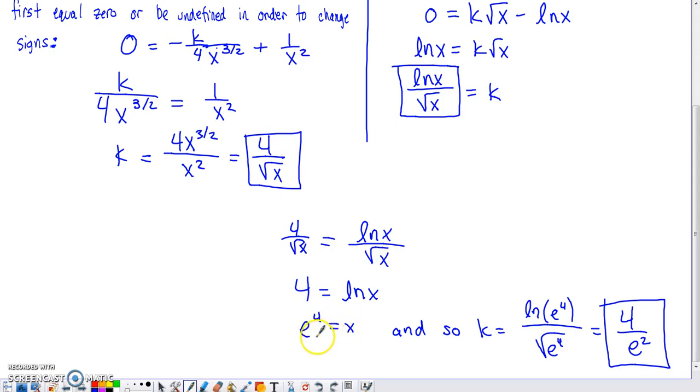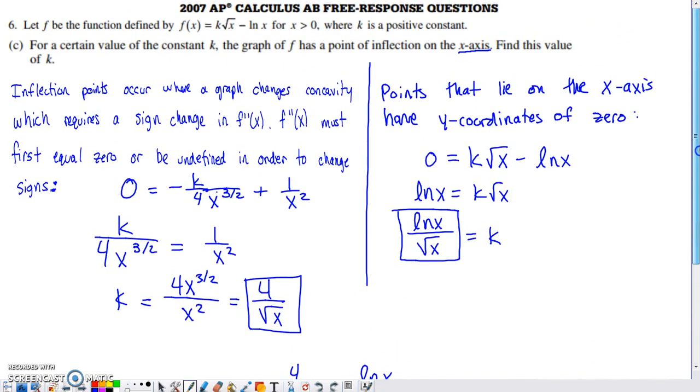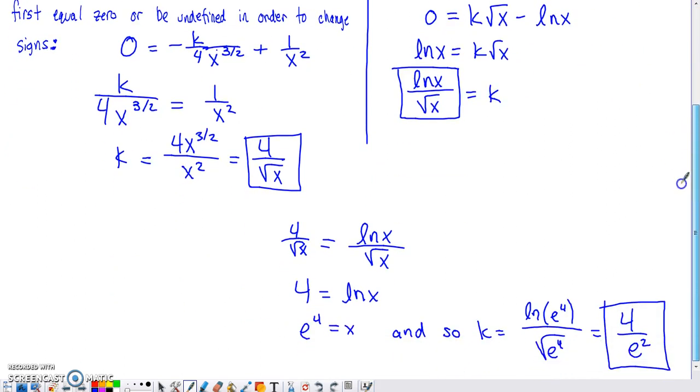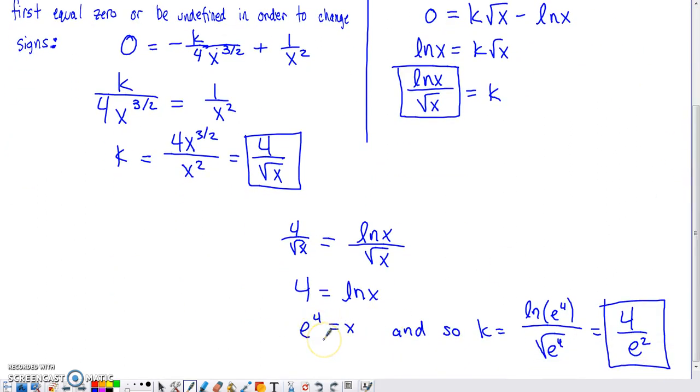Tempting, we've done a lot of work, tempting to say, all right, well, I'm done. x equals e to the fourth power. That's actually not what this question asked for. It asked to find this value of k. So now we know the value of x that makes this happen, but we don't yet know the value of k.